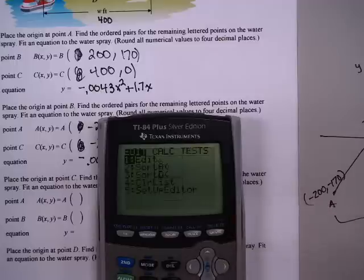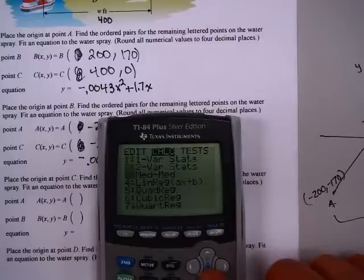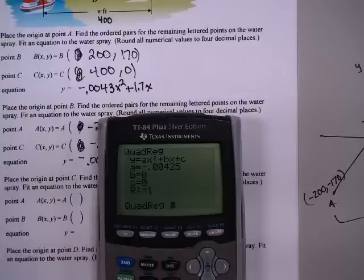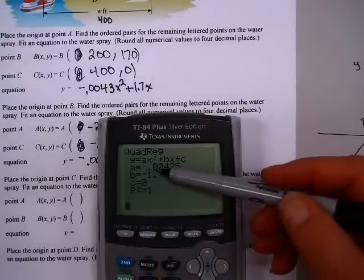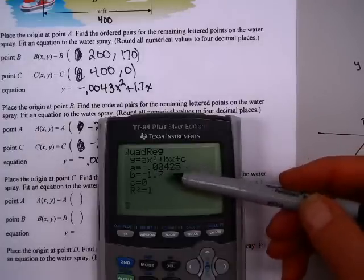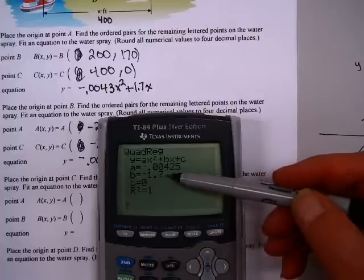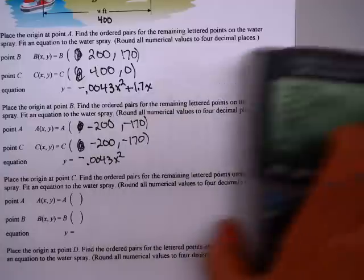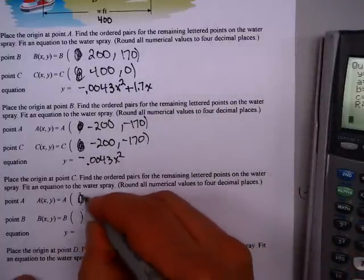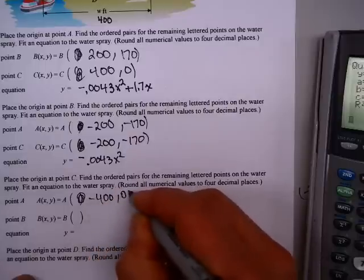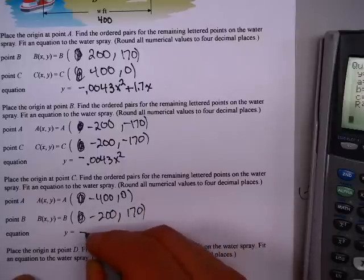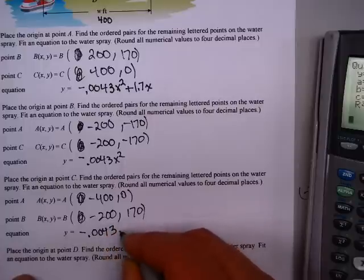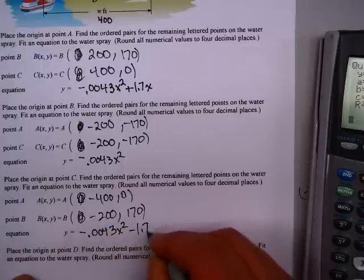Now, do a quadratic regression. Hit stat. Go over one arrow to calc. Down to quadratic regression. Either hit enter or calculate to get this one. Minus 0.00425. That's negative 0.0043, rounded to four decimal places. Minus 1.7x, and c is zero. So, write these points in. A was minus 400, zero. B was minus 200, 170. And my equation is minus .0043x squared minus 1.7x.